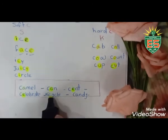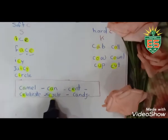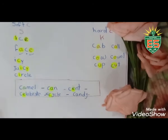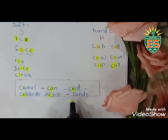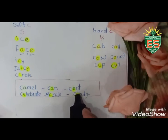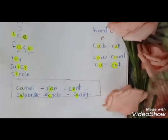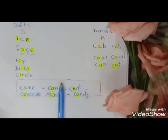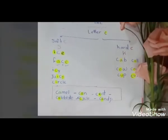Candy—I can't say 'sandy'. I say 'candy' because I have A after C, so it will be hard C. It should be candy. This is our session today. It's very easy.